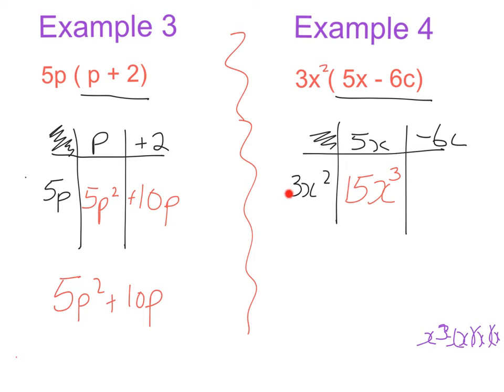Here we have a plus and a minus, that is going to give me a minus. 3 multiplied by 6 is 18, and the x squared and the c we can't multiply them out any more, so we're just going to write minus 18x squared c.